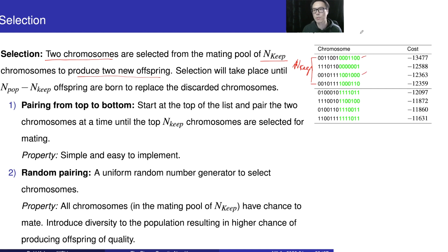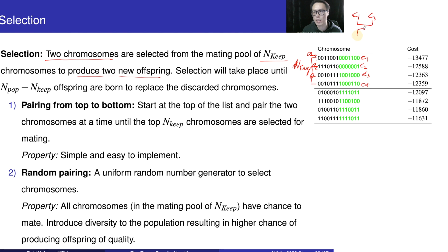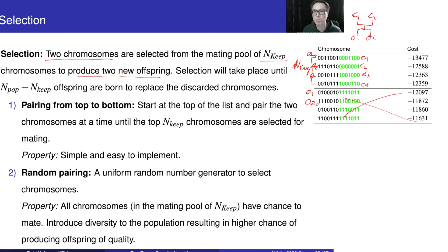For example, we call them C1, C2, C3, C4. I'm going to pick C1 and C3 — they are going to reproduce offspring one and offspring two. The purpose of these offspring is to replace the lower four chromosomes. For example, this one will be offspring one and this will be offspring two.